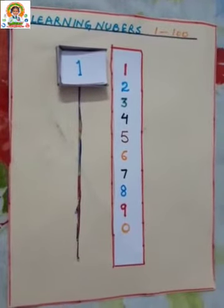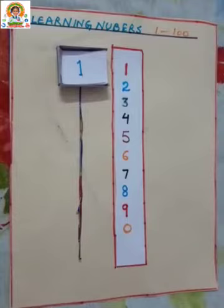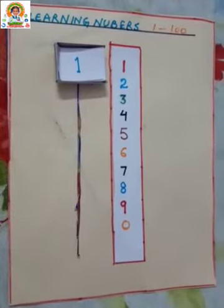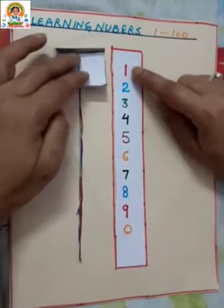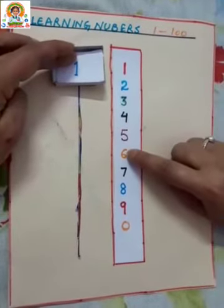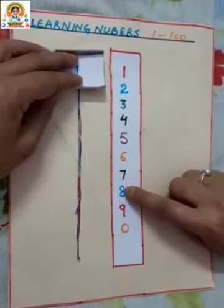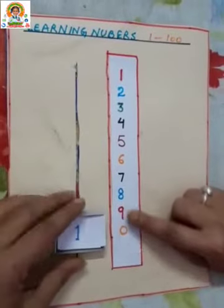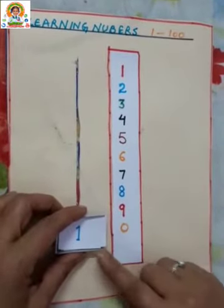to teach and learn numbers from 1 to 100. Let us see how it works. Now let us count 1, 2, 3, 4, 5, 6, 7, 8, 9 and 10. 1, 0, 10.